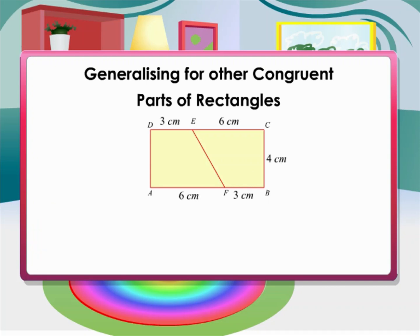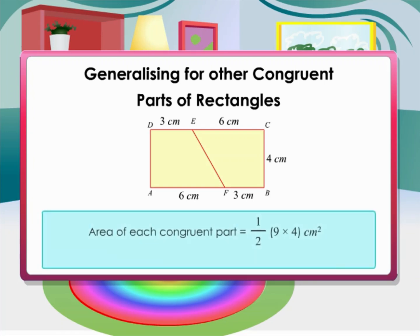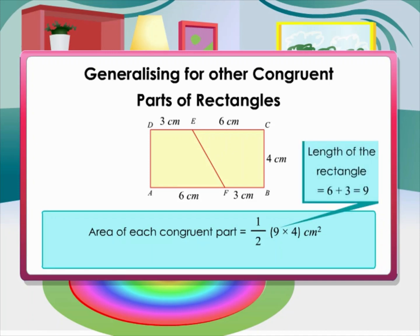Consider the example: the area of each congruent part equals half times the area of the rectangle, which equals half times 9 times 4, since the length of the rectangle is 9. Therefore, the area of each congruent part equals 18 cm².